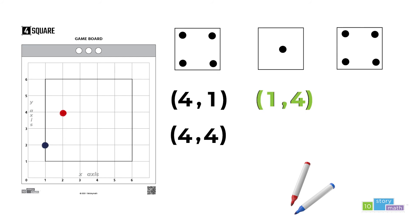So which of these ordered pairs do you think the red team should choose? The point (1,4) is right next to the previous point on the game board. So the red team uses their marker to mark that location.